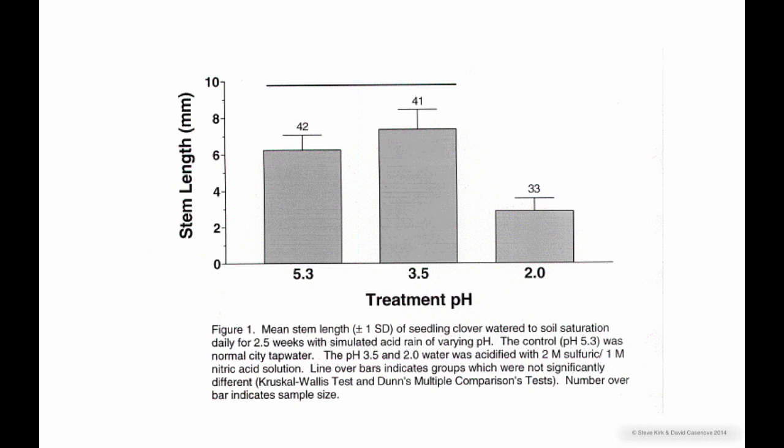Now look at this graph. It starts by saying mean stem length of seedling clover, so we know that we're measuring the stem length of clovers. Watered to soil saturation daily for 2.5 weeks, so now we know what the treatment was or how they did the experiment with simulated acid rain of varying pH. So that's our independent variable, different pH. The control, pH 5.3, is the control group.